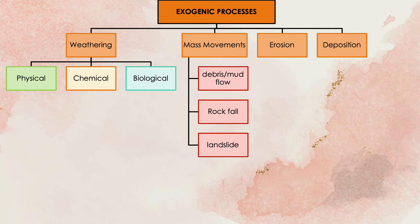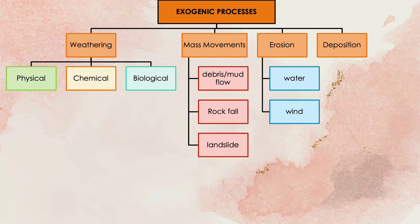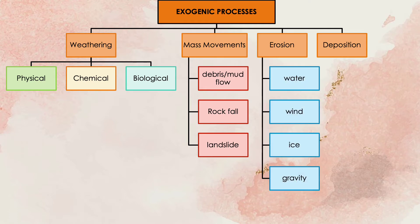Erosion, on the other hand, is the action of surface processes that remove soil, rock, or dissolved material from one location of the Earth's crust and then transports it to another location. There are four major agents of erosion: water, wind, ice, and gravity.